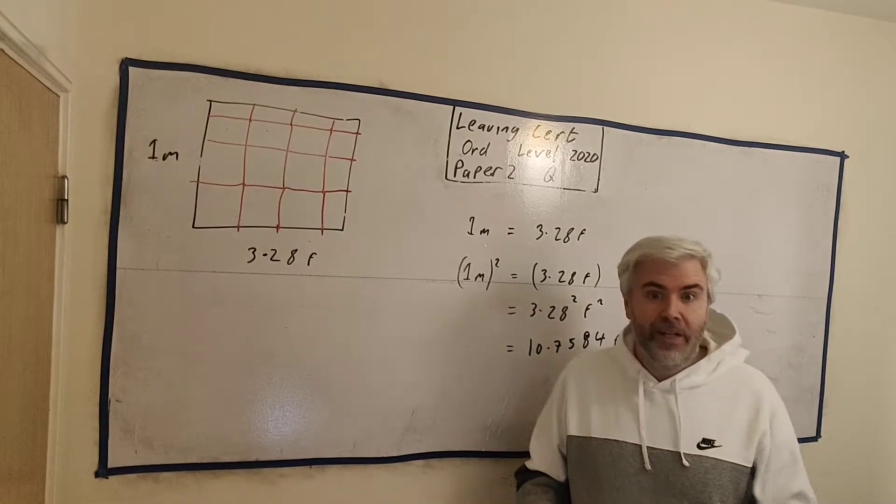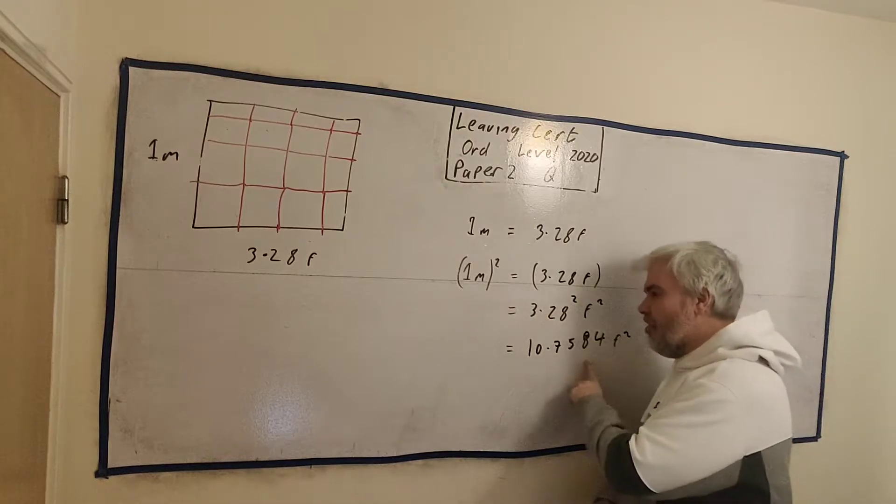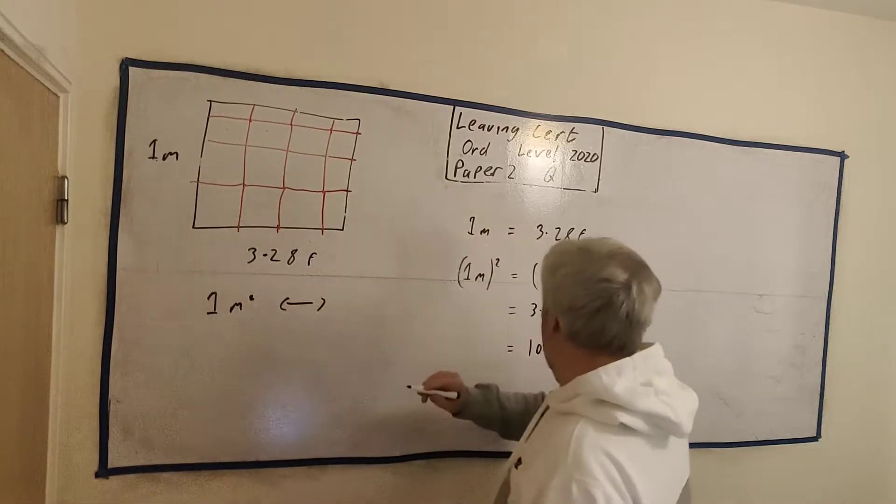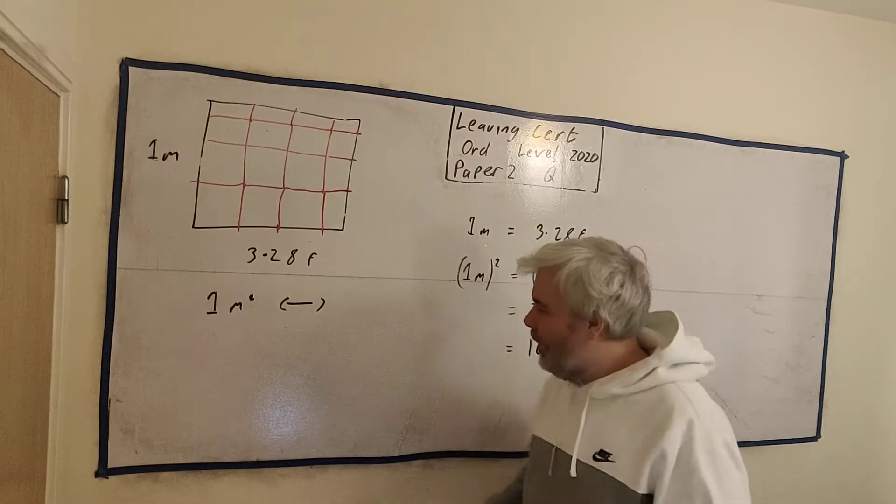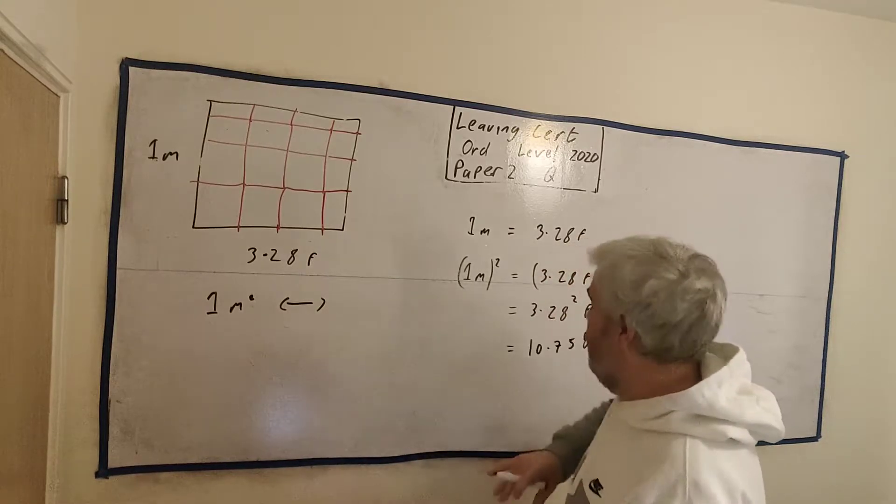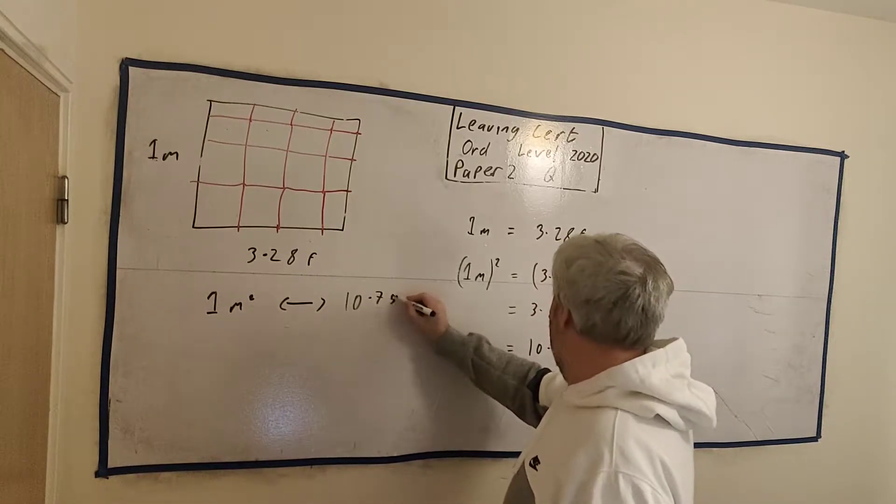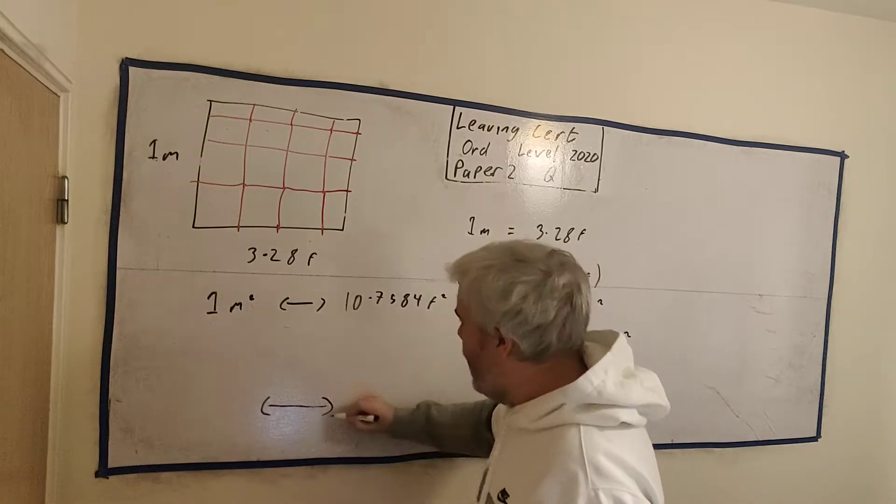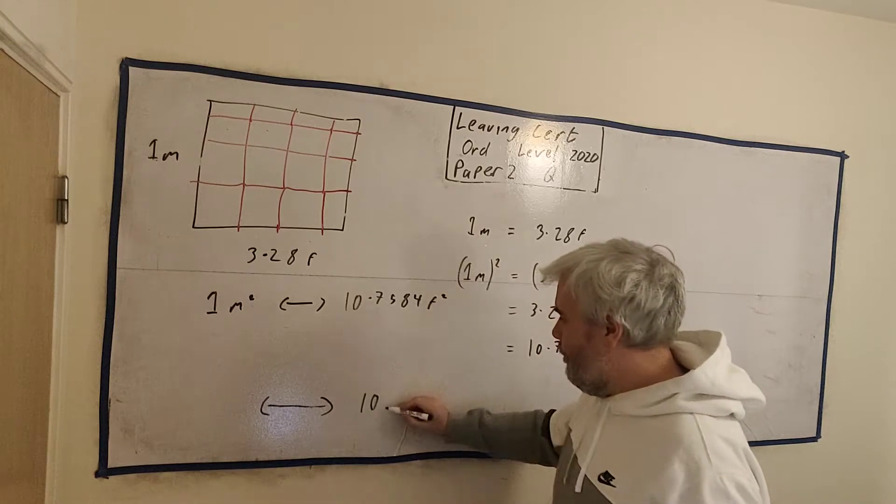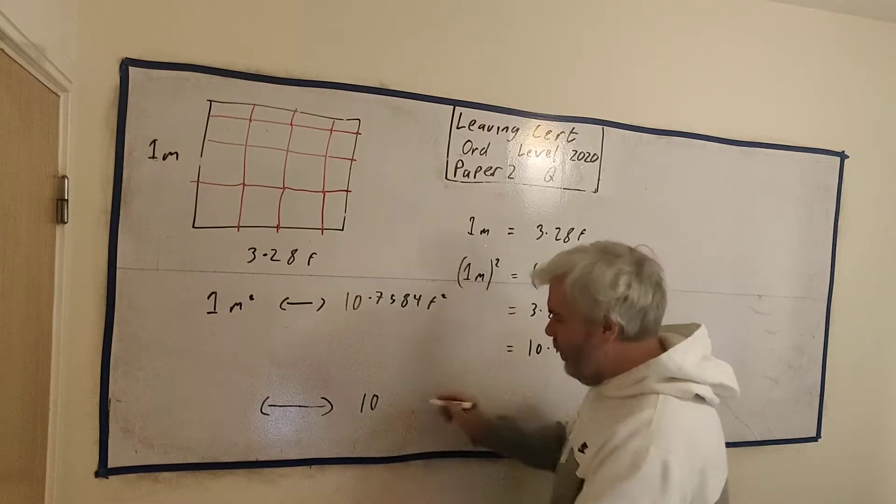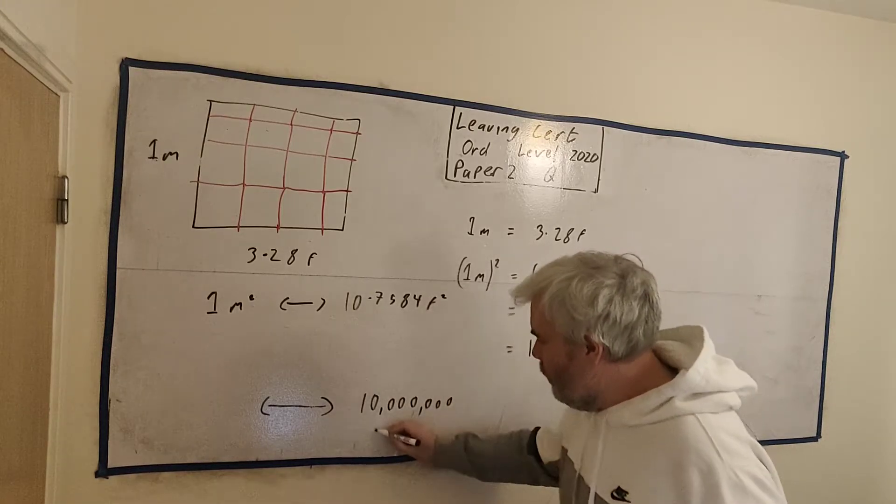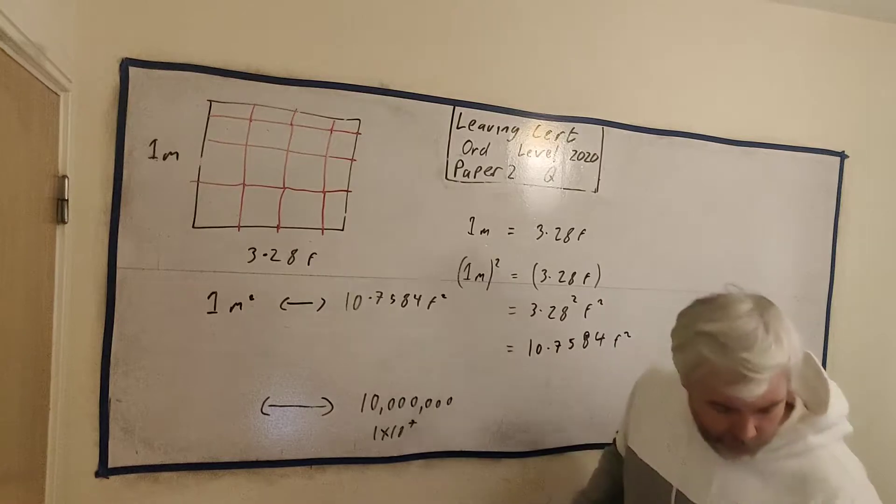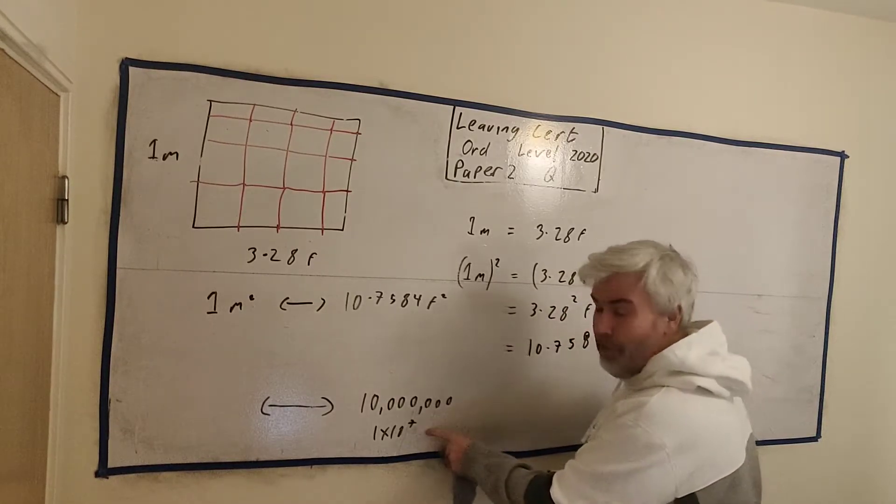Now the problem is, this question, they tell us there's 10 million square feet. How many metres? So we need to just go backwards. But that's not too hard. If we set it up like this, 1 metre squared converts into 10.7584 feet squared. At the end of this, I would like to be able to change 10 million. I could have wrote that as 1 times 10 to the 7. Most calculators will do it for you, though, is the good news.